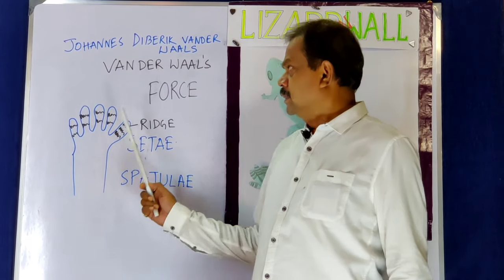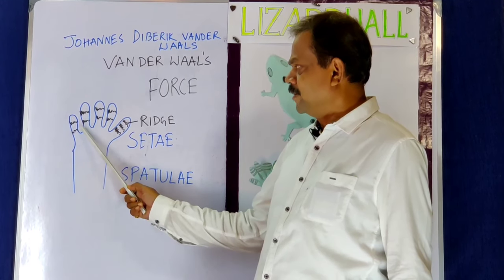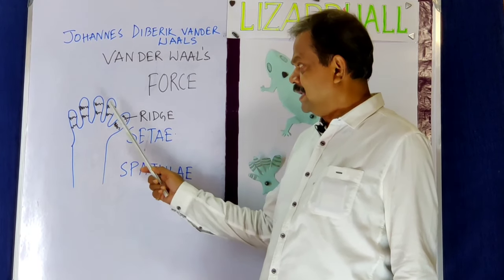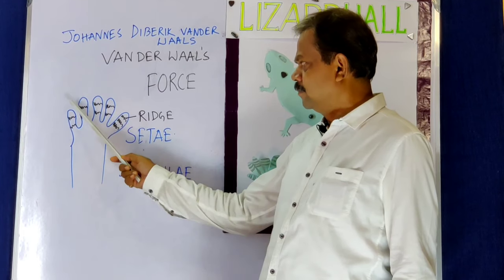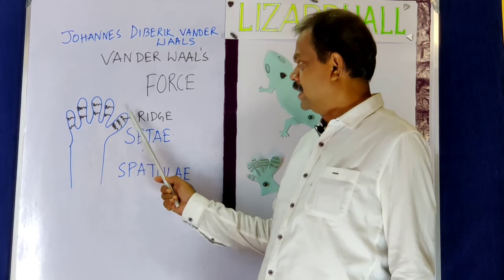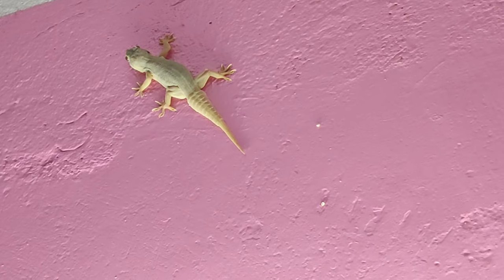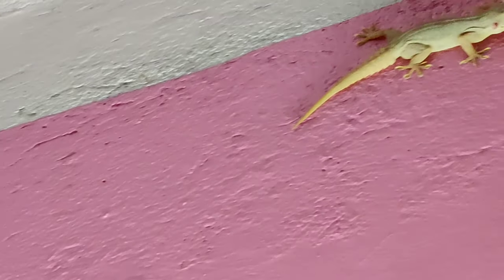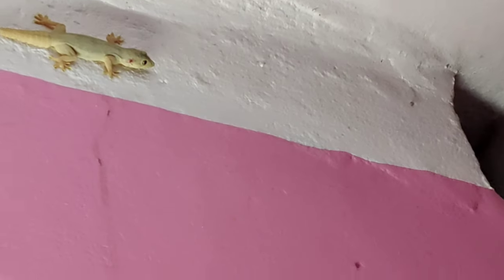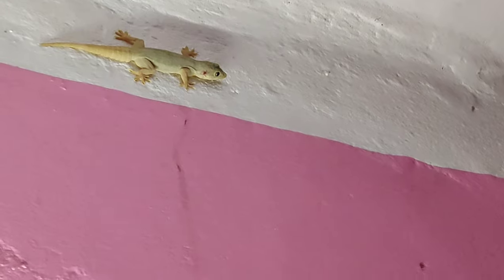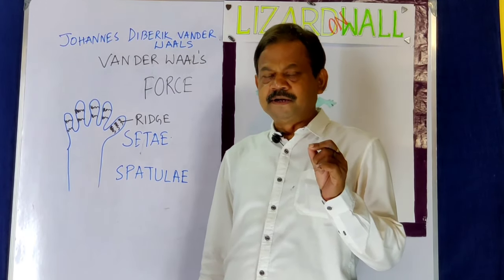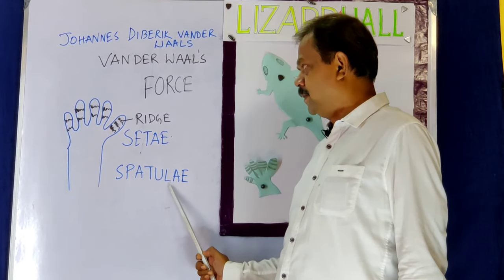Each limb has many ridges on its fingers or toes. This is the limb, and here on the finger or toes, some ridges are present. Each ridge is made up of fiber-like structures called setae, and these fibers are also branched to form spatulae.